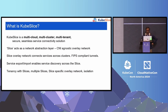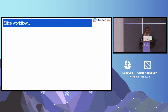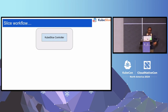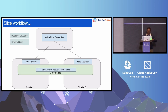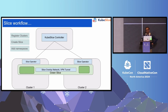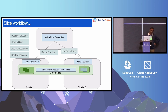A slice acts as a network layer — it's agnostic. It connects across the clusters, and you can import and export services for connectivity across the slice. In a quick nutshell: we have a controller, we have clusters like cloud one, cloud two, region one, region two. You register clusters, create a slice — it creates a FIPS-compliant VPN channel. Then add namespaces to the slice, deploy services, export the service to the other side, import the service, and connect the services.